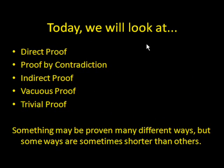Today we're going to look at five different methods of proof: direct proof, proof by contradiction, indirect proof, vacuous proof, and trivial proof. Note that if you have a question you're trying to prove or a statement, you don't necessarily have to use just one of these. You could do it in different ways, but sometimes one way is shorter than another way.